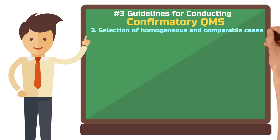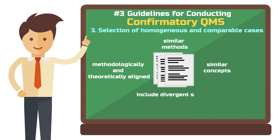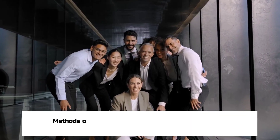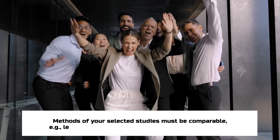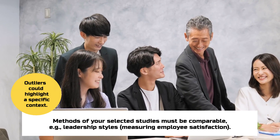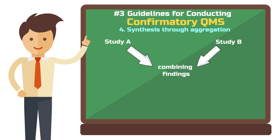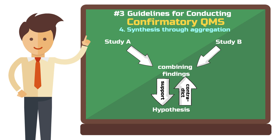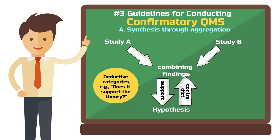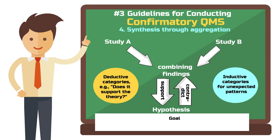Third step: choose cases that are methodologically and theoretically aligned to ensure meaningful comparisons. However, including a few outliers can be useful for testing the boundaries of your theory. For example, if comparing leadership styles, ensure the methods for measuring employee satisfaction are consistent across studies. An outlier might be a study showing that transformational leadership only works in specific cultural contexts. Fourth step: aggregation involves combining the findings of different studies to see whether they support or contradict your hypotheses. Use deductive categories — for example, 'supports the theory' — and introduce inductive categories when unexpected patterns arise.